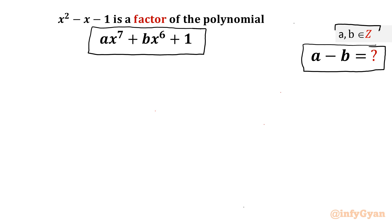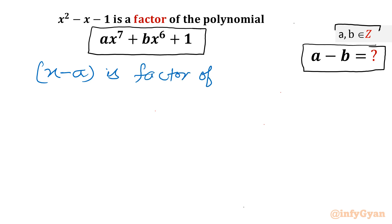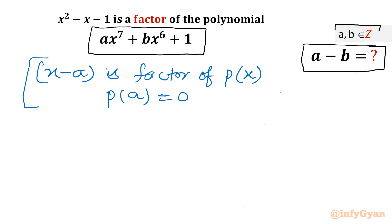This question is based upon the factor theorem. What is the factor theorem? If x minus a is a factor of polynomial p(x), then p(a) would be 0. This is the factor theorem. Let us apply it as per our problem.